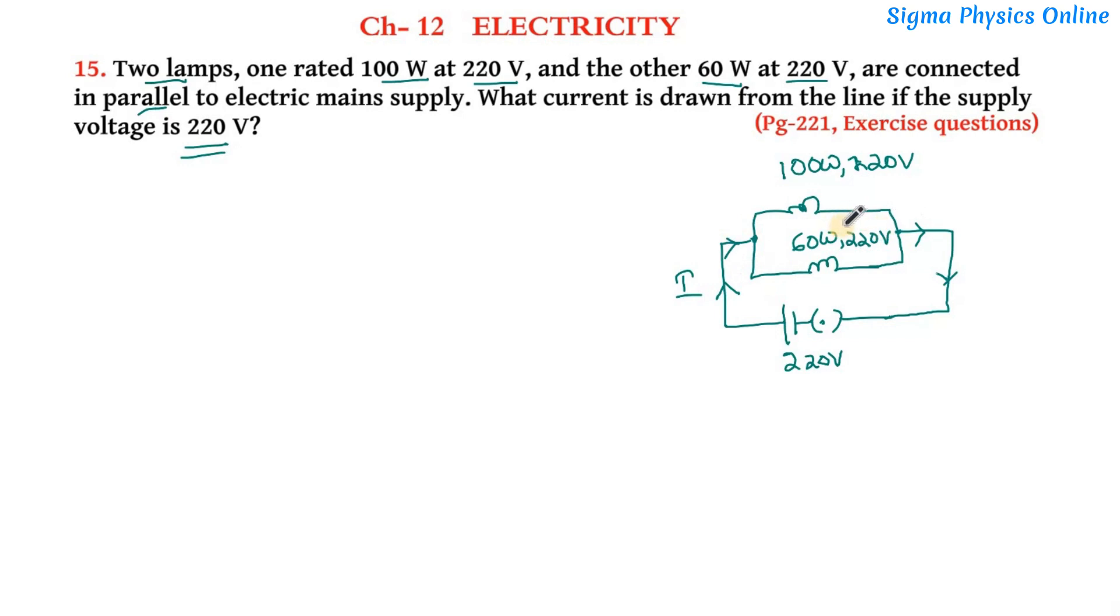We know that in a parallel circuit the potential difference across the resistors remains the same. That is, if A and B are two points from where these two lines branch out, then the potential difference across A and B would be the same as the potential difference across the supply line. That is, the potential difference between A and B would be 220 volt.